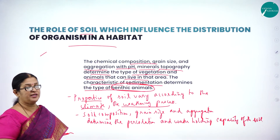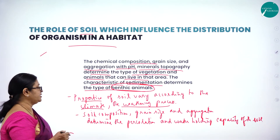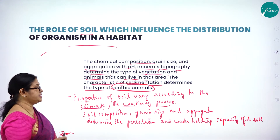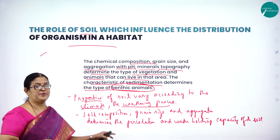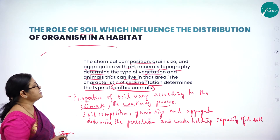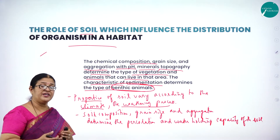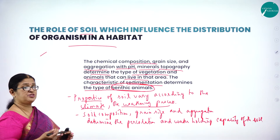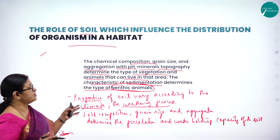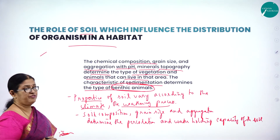The chemical composition, grain size, and aggregation of soil grains along with pH, minerals, and topography determine the type of vegetation and animals that can live in a particular area. The characteristics of sedimentation determine the type of benthic animals — that is, animals living in the deeper parts of the soil or water bed. The distribution of soil also varies from region to region depending on geographical and climatic differences.